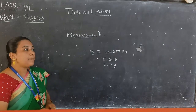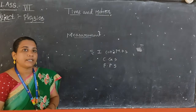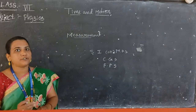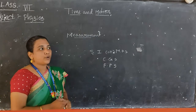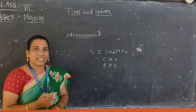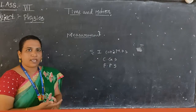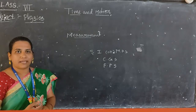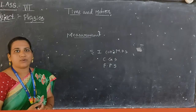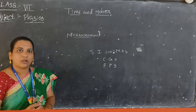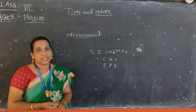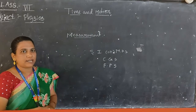Coming to the non-standard measurements — non-standard measurements will not give any accurate values. They may change from person to person. Examples of non-standard measurements include cubit, hand span, foot, and inch. All these non-standard measurements will not give accurate values for measuring physical quantities. So we are mostly not using non-standard units to measure; we depend on standard units.